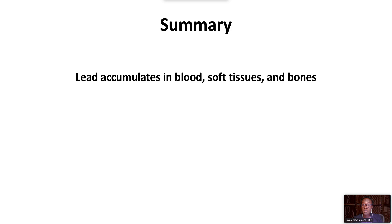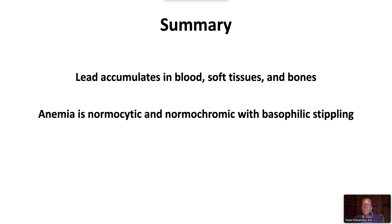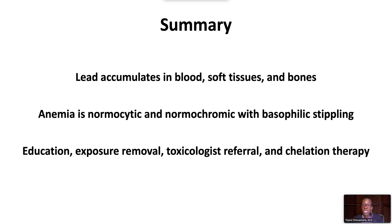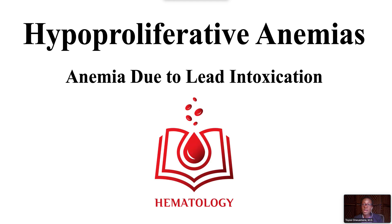In summary, lead accumulates in blood, soft tissues, and bones. The anemia of lead poisoning is normocytic and normochromic with basophilic stippling on the peripheral blood film. Management involves education, exposure removal, toxicology referral, and chelation therapy. This ends our video on hypoproliferative anemias, anemia due to lead intoxication.